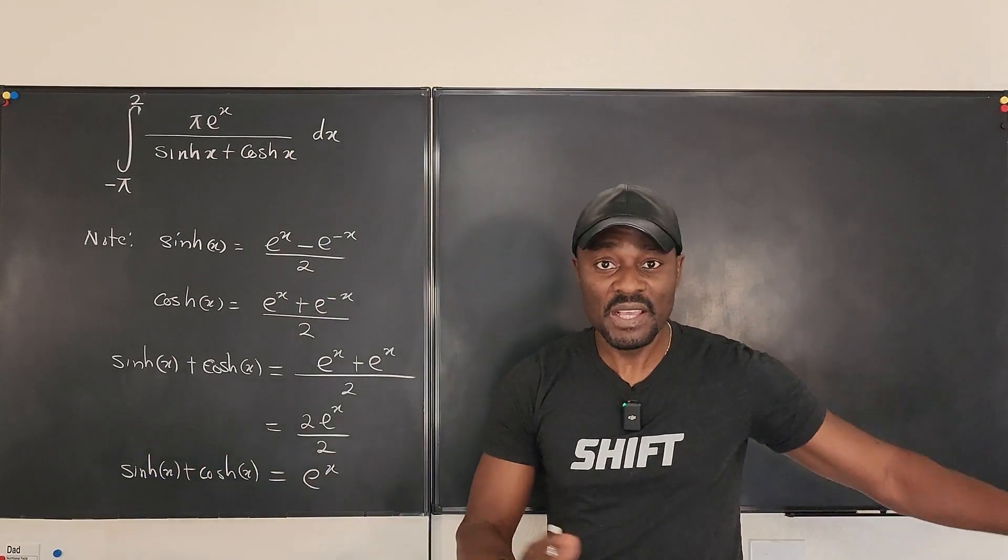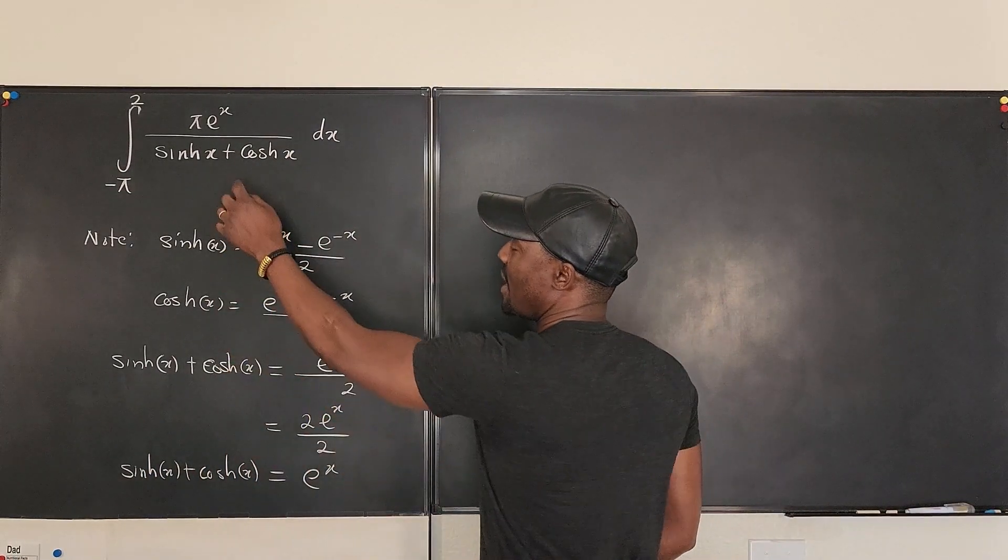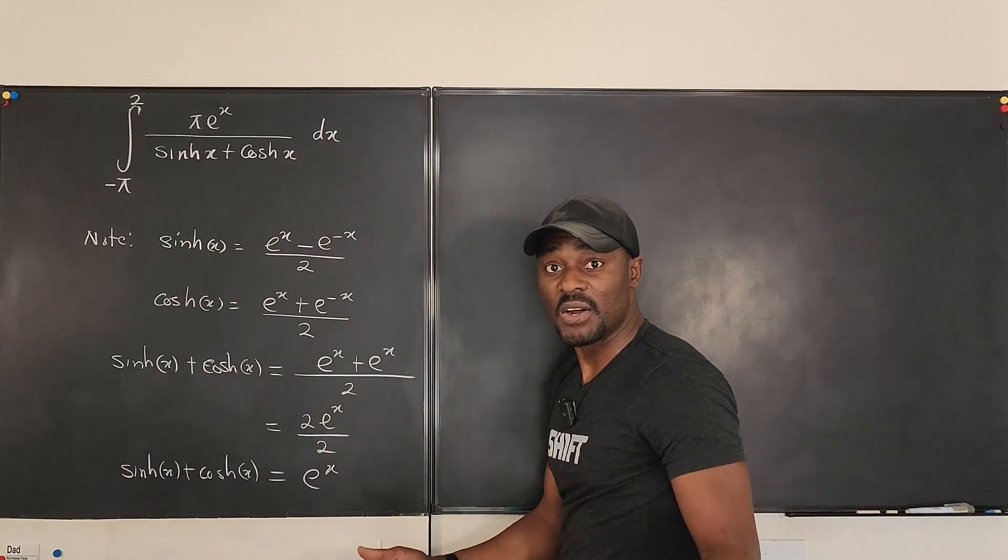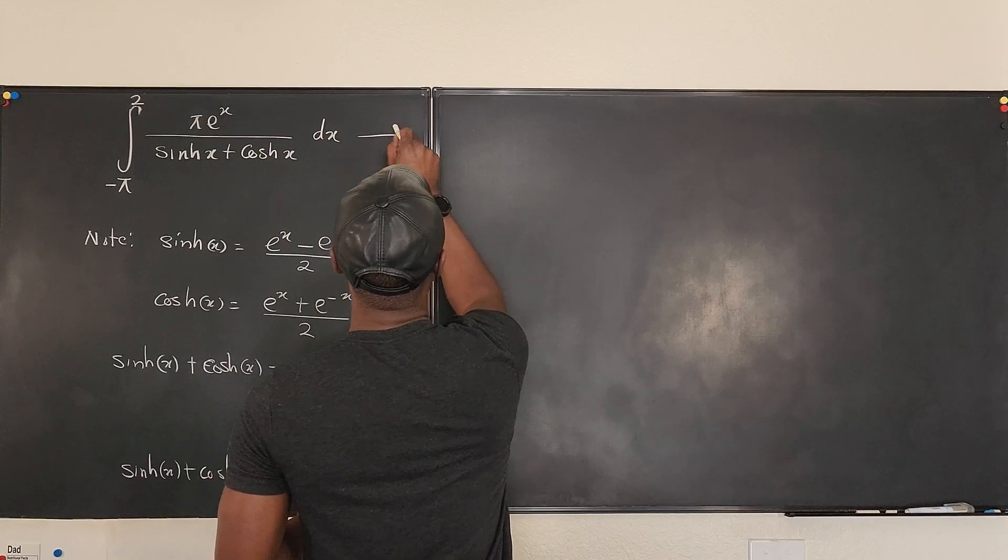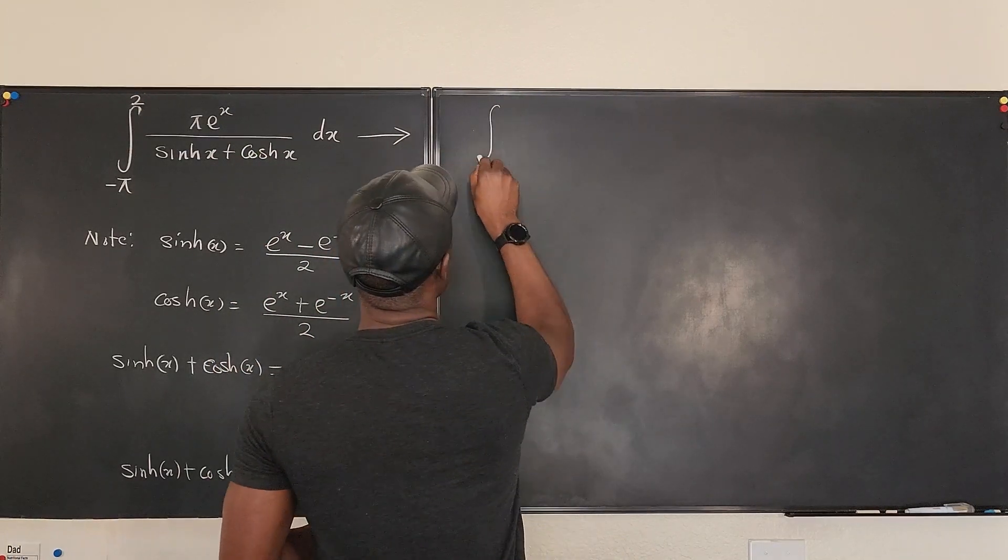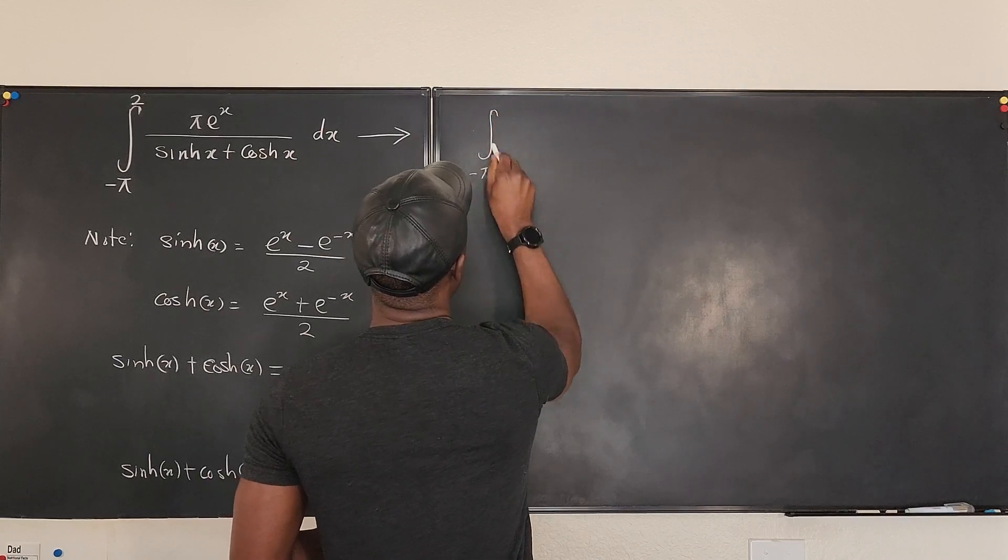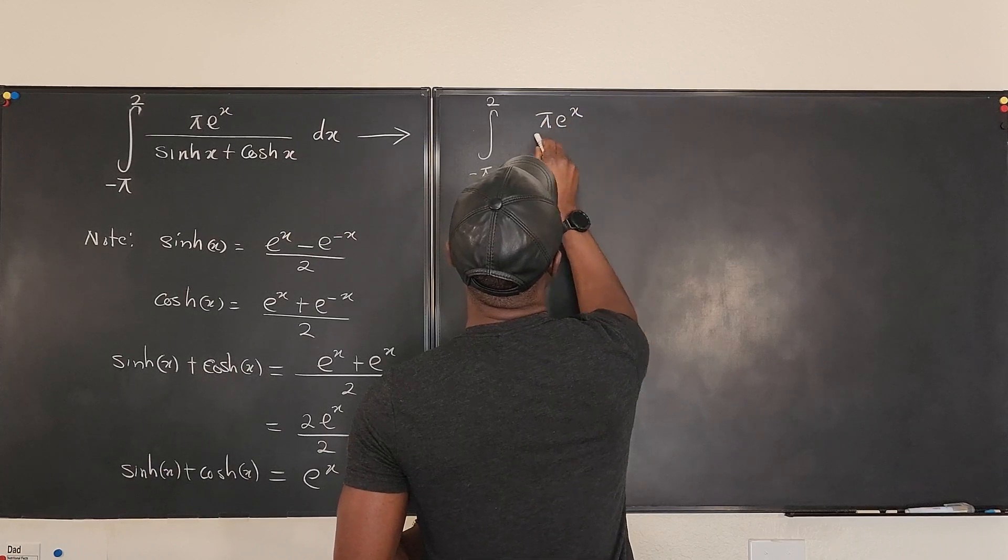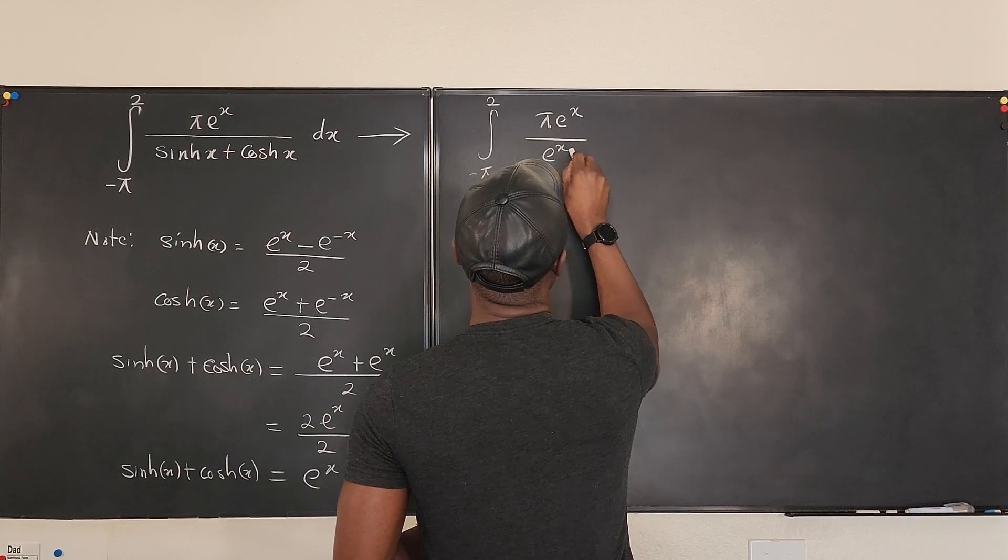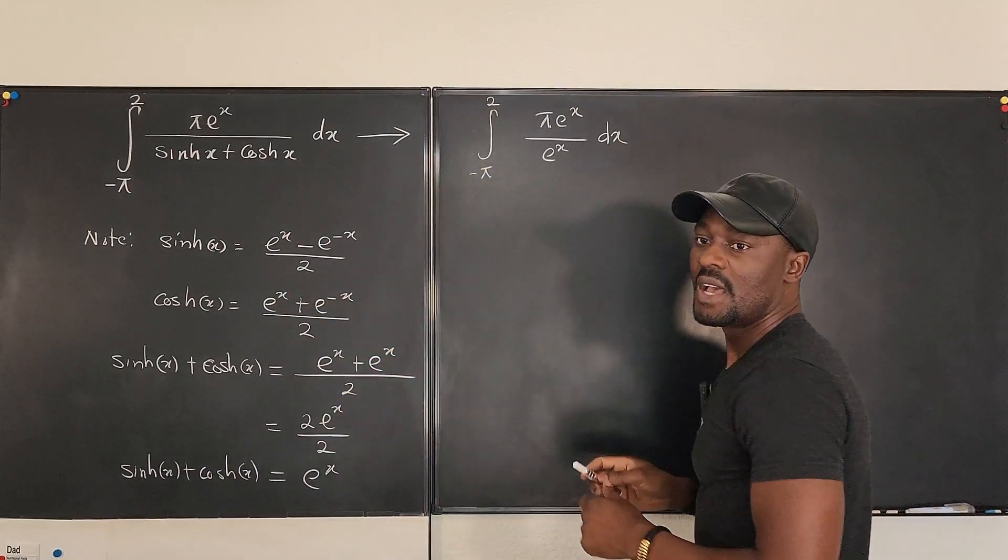Now, this is just pre-calculus knowledge, and that's what makes this exercise a little bit more complicated. Otherwise, this expression here is the same thing as the integral from -π to 2 of πe^x divided by e^x dx.